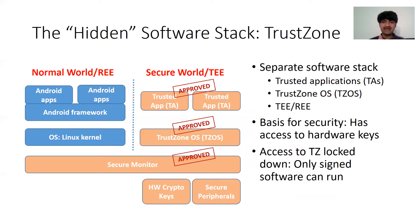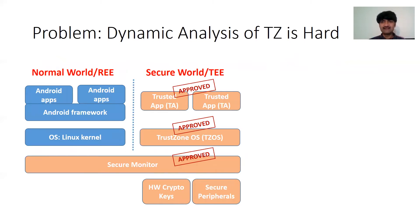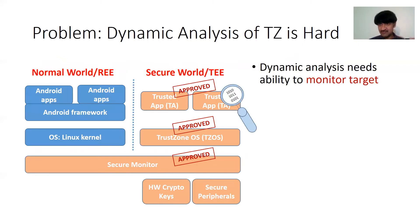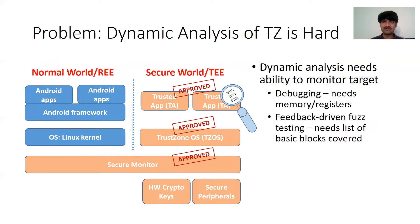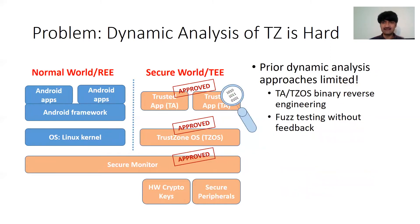Because of such privileged access, software needs to be signed to be able to run in TrustZone, and the ability to execute software there is very tightly regulated since it forms the basis for security. Dynamic analysis needs the ability to monitor or introspect the target in some way, perhaps through instrumentation. Debugging needs to access memory and registers. Feedback-driven fuzz testing needs access to the list of basic blocks executed as a result of feeding a particular piece of input. Unfortunately, because TrustZone requires software to be signed, software cannot be changed in any way, and therefore you cannot instrument or monitor TA execution. Dynamic analysis in TrustZone is therefore very limited.